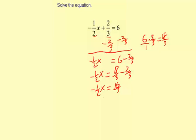And then to solve for x, I need to multiply by the reciprocal of negative 1 half, which is negative 2. So it would be negative 2 over 1 times negative 1 half x equals negative 2 over 1 times 16 over 3.